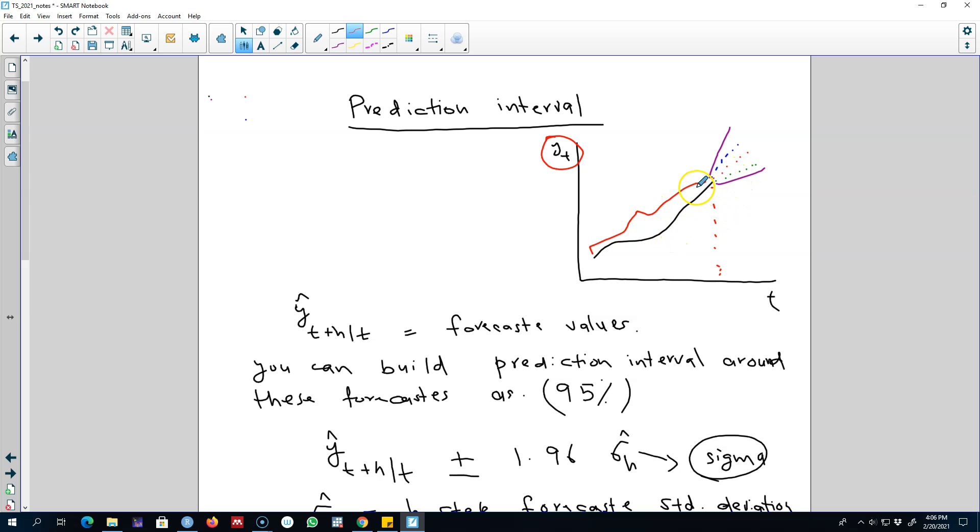Now we'll have different futures depending on different variables. The future is not fixed, so it can hold different scenarios for us. Our series may go in this direction, in this green direction, in this red direction, or in this blue direction.